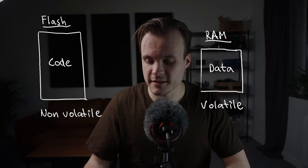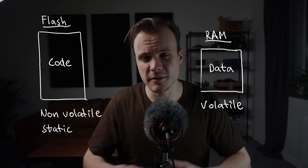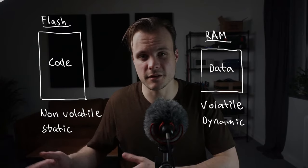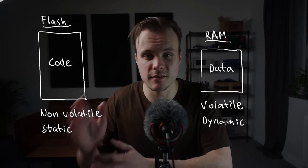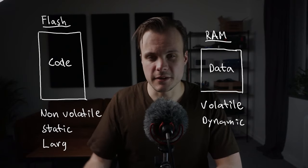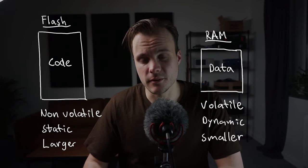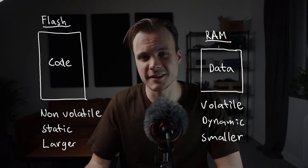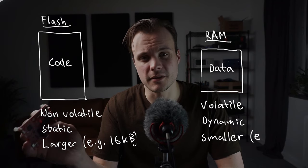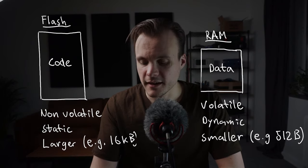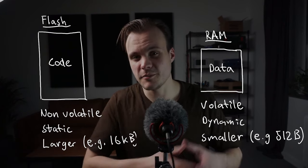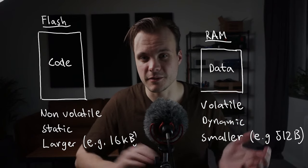The flash is going to be used to store your program code — the instructions that your CPU is executing — and the RAM is going to be used for your program variables and data. What's inside the flash remains pretty much the same throughout program execution, while what's inside RAM changes depending on which function you're in and what's stored in your variables. On most microcontrollers the flash memory is going to be much larger than the RAM. For example, on the microcontroller I'm using I have 16 kilobytes of flash but only 512 bytes of RAM.